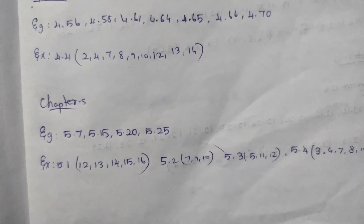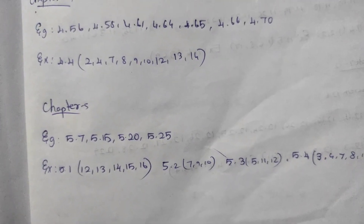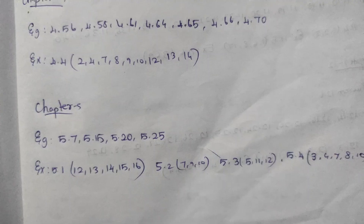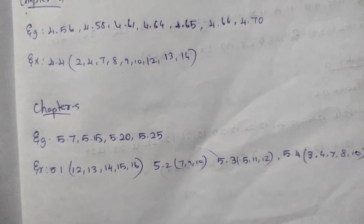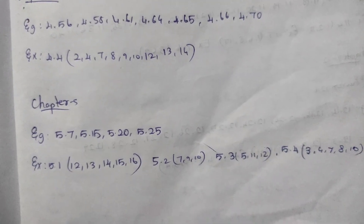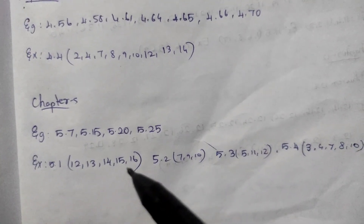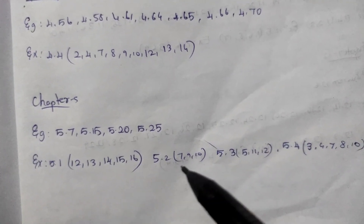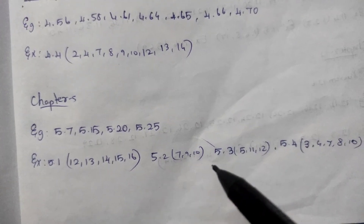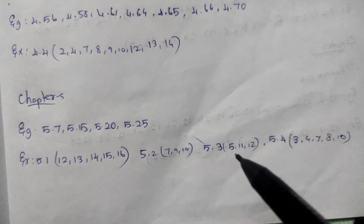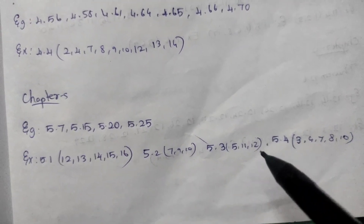Example 5.7, 15, 20, 25. Example 5.1: 12, 13, 14, 15, 16. Example 5.2: 7, 9, 10. Example 5.3: 5, 11, 12.